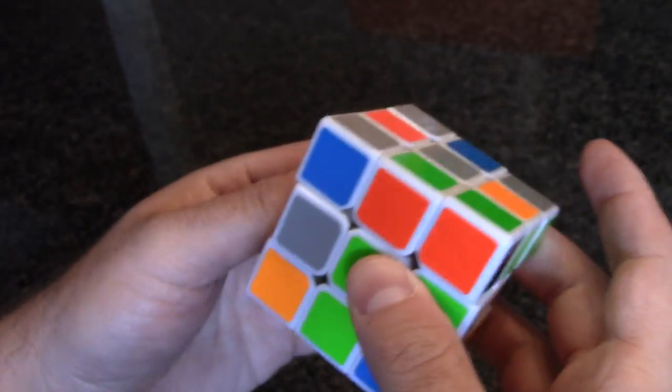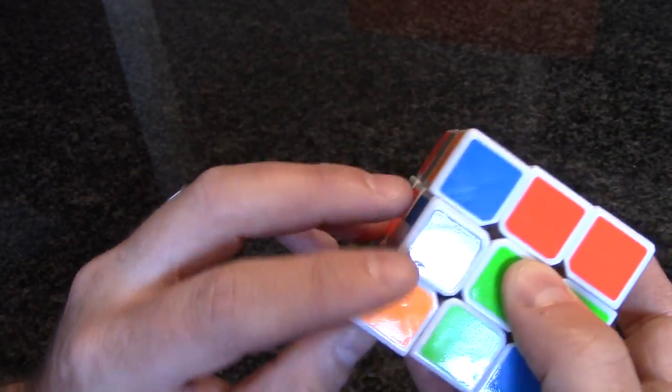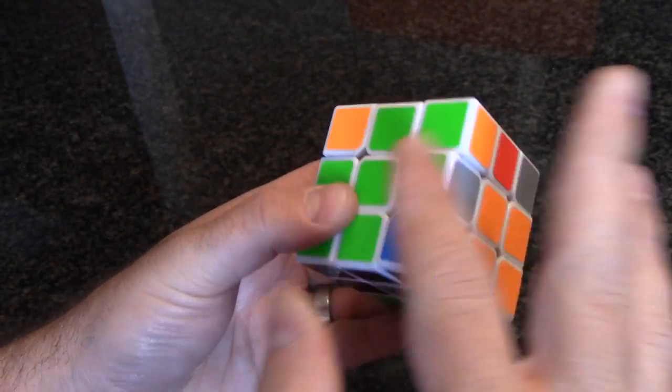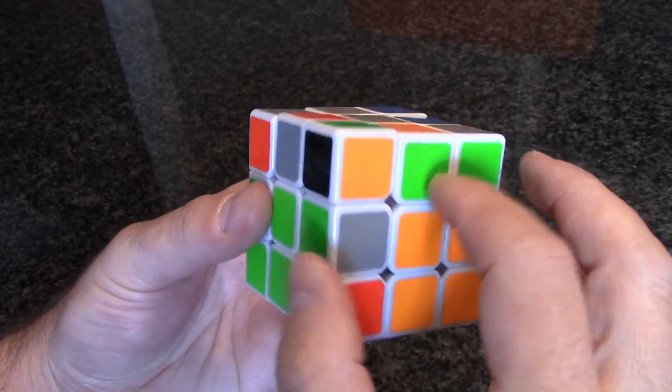So instead, I'm going to rotate and place it in the front left, leaving the green-orange slot ready for the next pair, which is here.